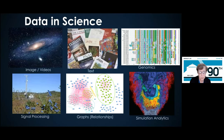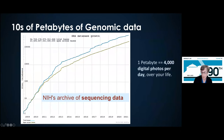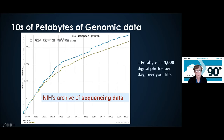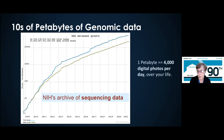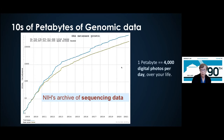The data we look at in science runs the spectrum from images and videos to genomic data, signal processing data from carbon sensors in the atmosphere, simulation data, and more. This data is growing very rapidly. The size of sequencing data the National Institutes of Health archives is storing is growing on a logarithmic scale — tens of petabytes of genomic data. A petabyte would be how much data you'd collect if you took 4,000 digital photos every day over your life. So we've got lots of scientific data.